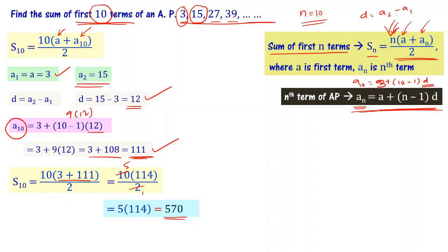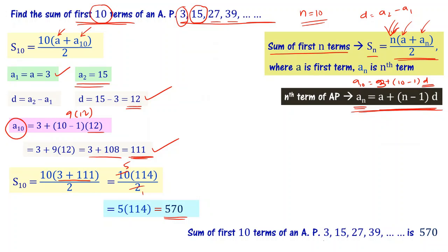So the sum of the first 10 terms of the arithmetic progression is 570.